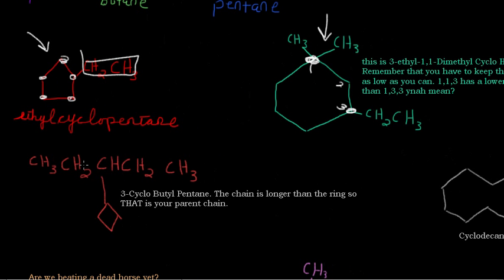Here you have an example of what I'm talking about right here. This is 3-cyclobutylpentane. The chain is longer than the ring, longer meaning it has more carbons in it, so that's your parent chain. So you have 1, 2, 3, 4, 5, and that's a standard alkane, your normal pentane. And attached to the third carbon is a cyclobutane, so remember when you have your subgroups it becomes an yl, so 3-cyclobutylpentane.